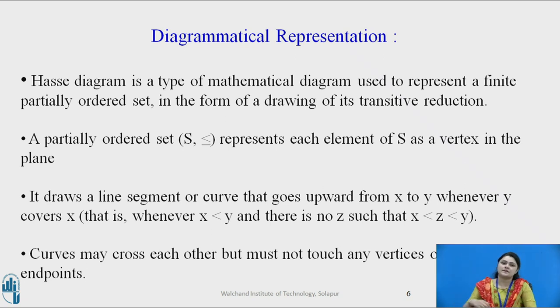Diagrammatical representation. Hasse diagram is a type of mathematical diagram used to represent a finite partially ordered set in the form of a drawing of its transitive reduction. Now for any partial order set, suppose say S comma less than or equals to, represents each element of S as a vertex in the plane and the relation here is less than or equals to.